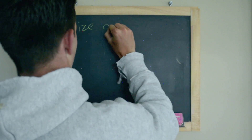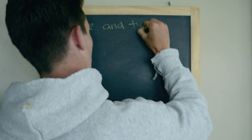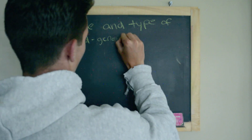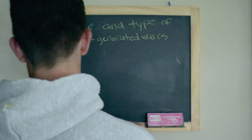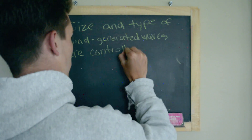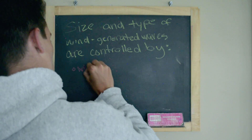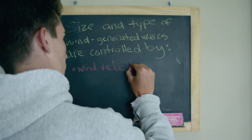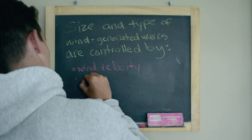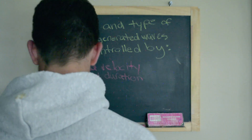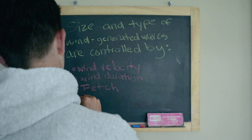Most of the waves present on the ocean surface are wind-generated waves. Size and type of wind-generated waves are controlled by things like wind velocity, wind duration, fetch, and the original state of the sea surface.